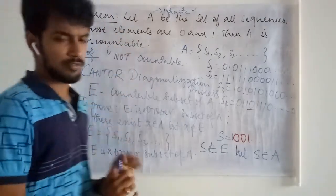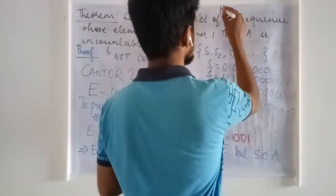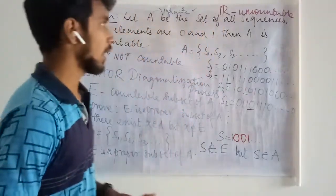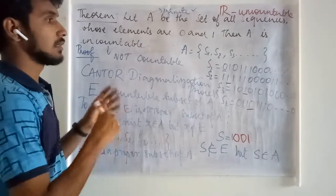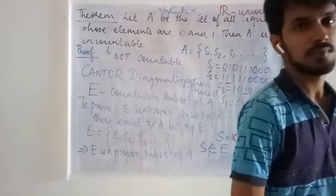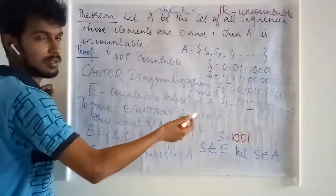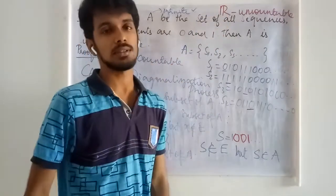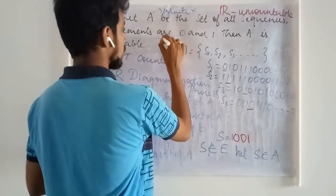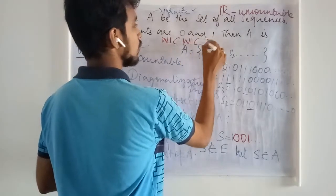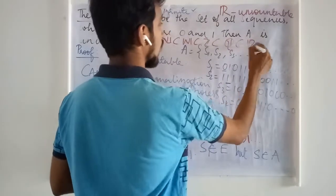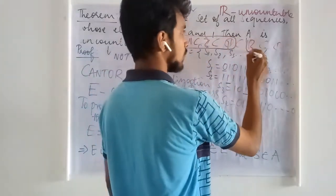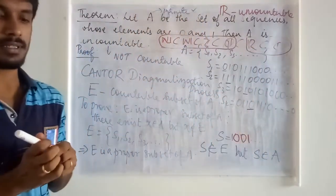In this theorem, what we have actually proved is that the set of all real numbers is uncountable. We all know that any real number can be written as a sequence of 0s and 1s in the binary number system. So a number in the binary number system is uncountable, and using that idea we say the set of all real numbers is uncountable. In the number system, we have N, W, Z, Q — up to here we have countability. R and C are uncountable. Therefore, the set of all real numbers and the set of all complex numbers are uncountable.